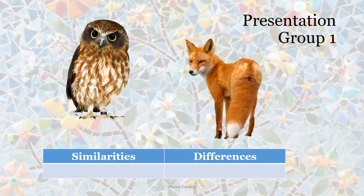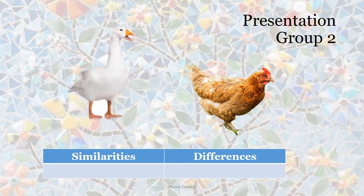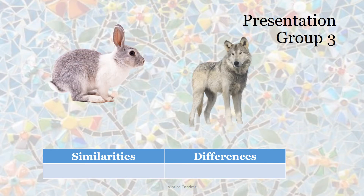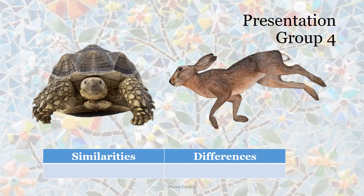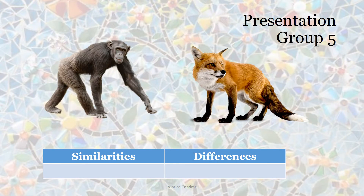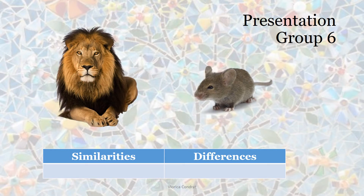Here are the creatures on the cards. We see an owl and a fox, a goose and a fox, a rabbit, a wolf, a hare and a tortoise, an ape, a fox, a lion and a mouse.